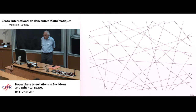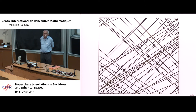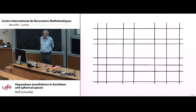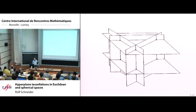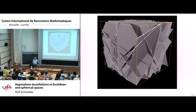Let me first show some pictures. This is meant to be a small, very small part of an isotropic Poisson line process. And it can also look like this, so directions may be preferred, some directions. Even this is not excluded, where we have only two directions, and in higher dimensions this is taken from some literature. It need not look so regular.